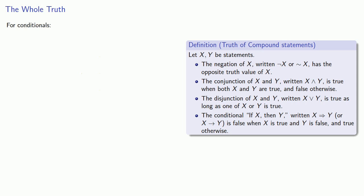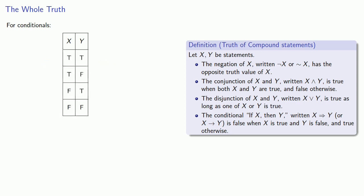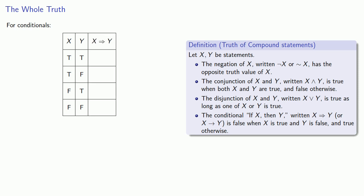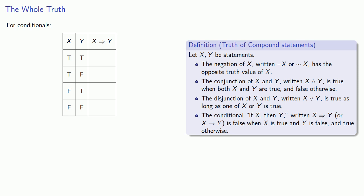The conditional is a little strange, so let's take a look at that. X and y could either be true or false, so let's list every possible combination. The conditional is false only when the antecedent is true and the consequent is false. So that case is the only time the conditional is false, and it's true in every other case.